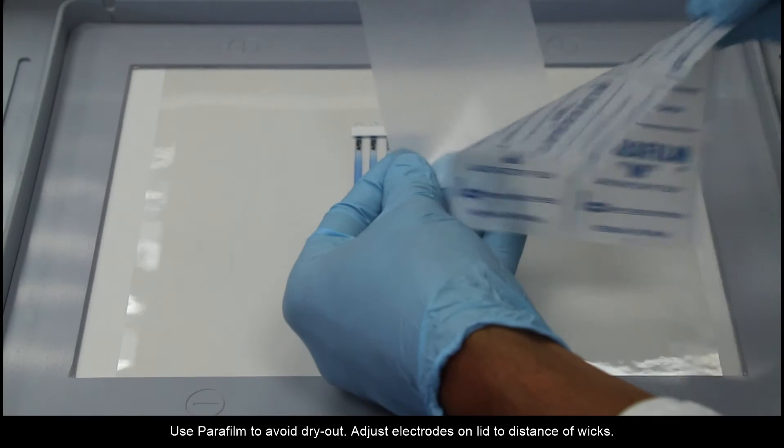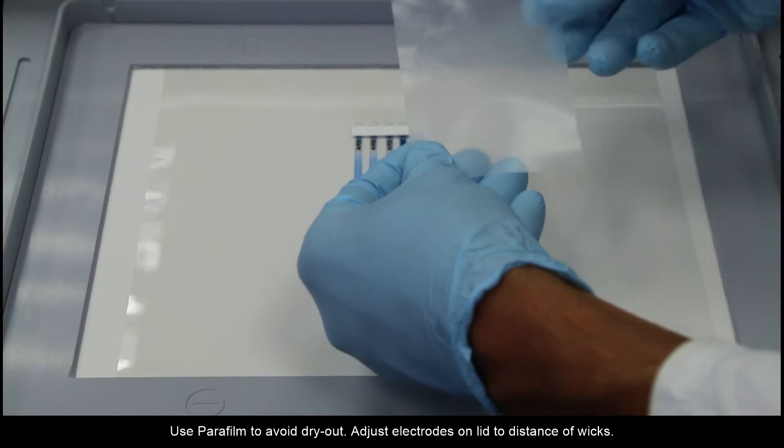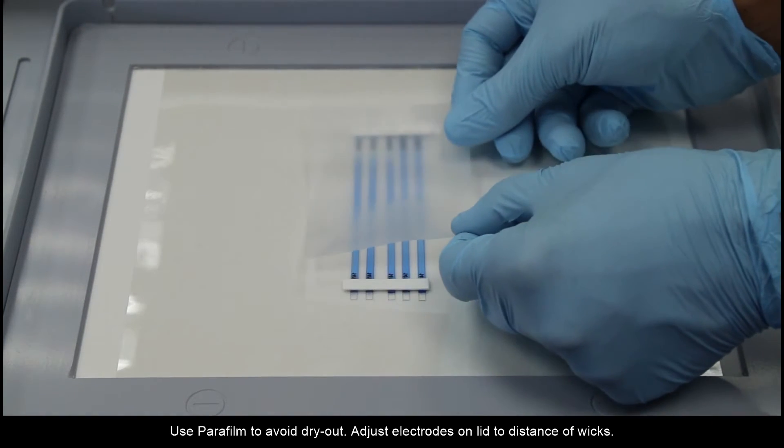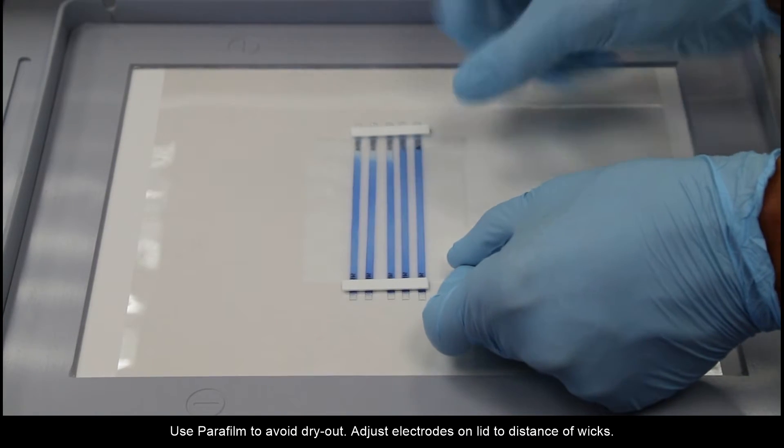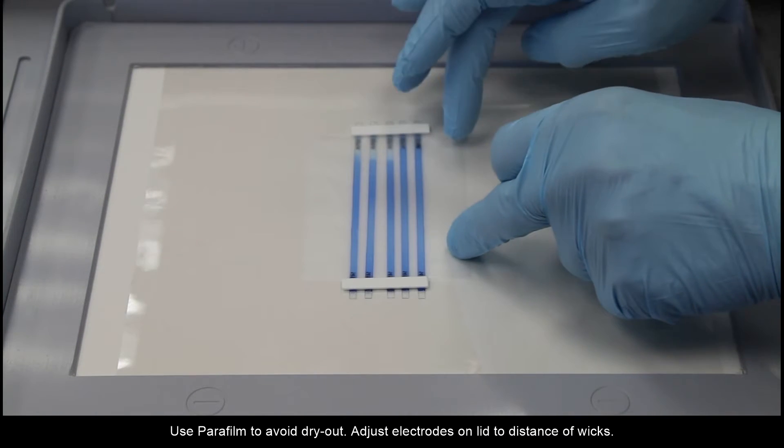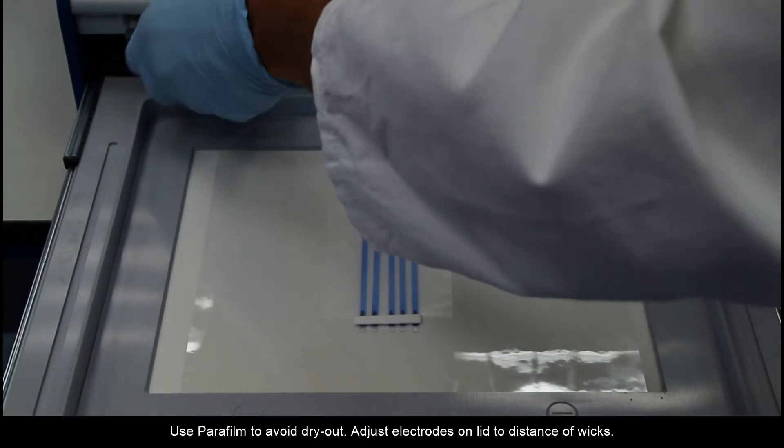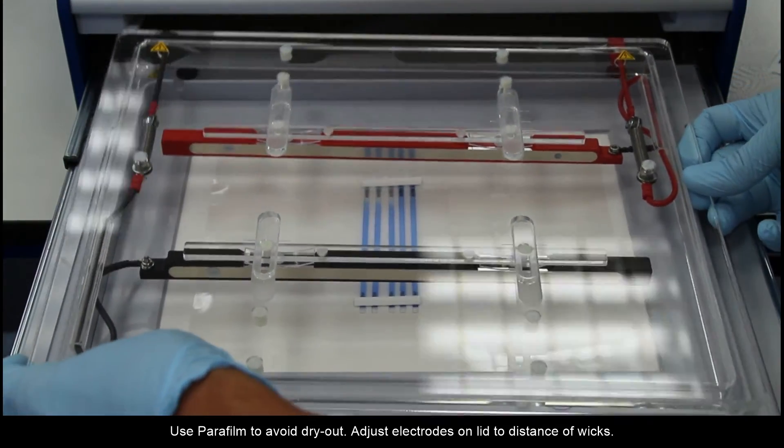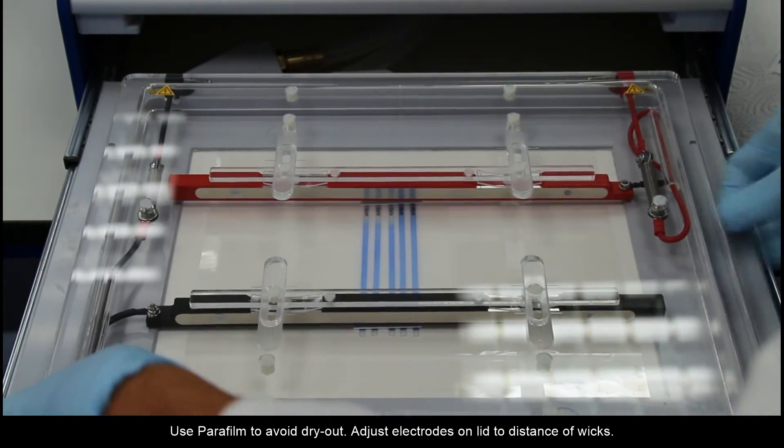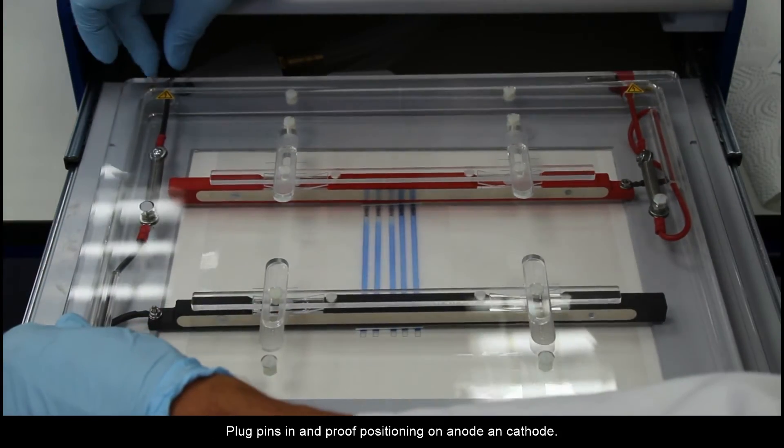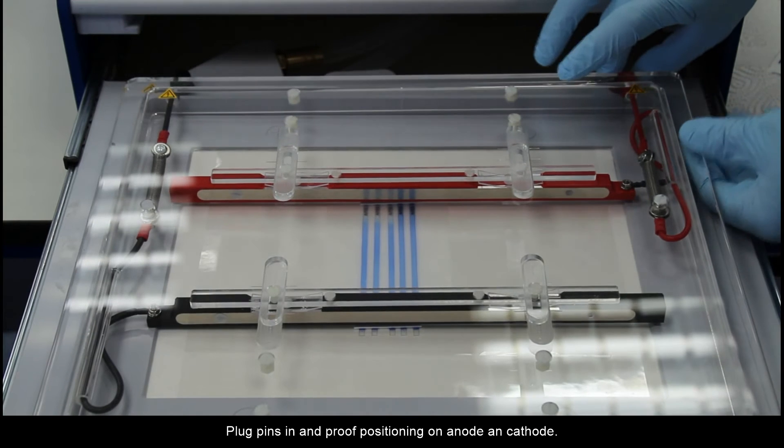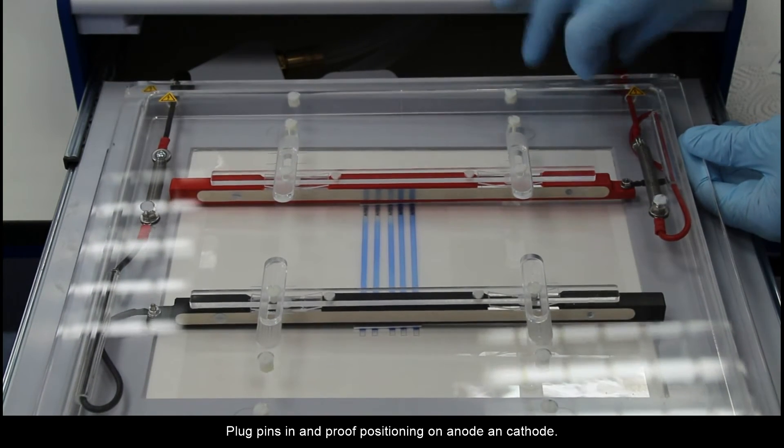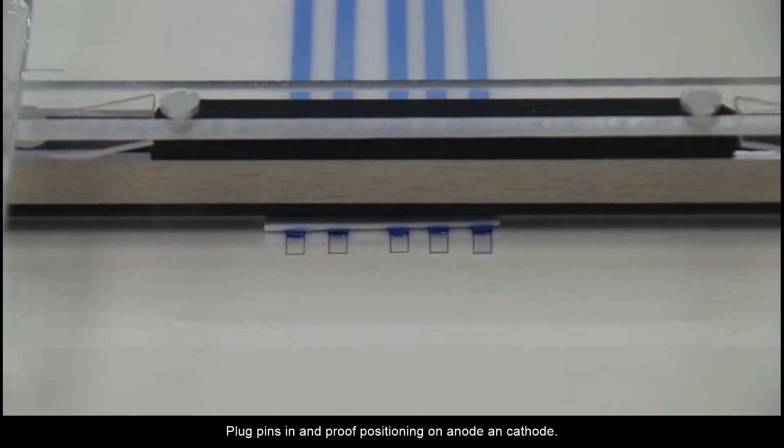Use parafilm to avoid dry-out. Adjust the electrodes on the lid to the right distance and place the electrodes on the wicks. Plug in your pins and verify the positioning of anode and cathode.